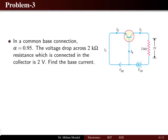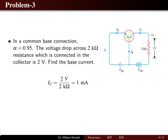In the third problem using a common base amplifier, alpha is 0.95. The voltage drop across a 2 kilohm resistance connected at the collector is 2 volts. We need to obtain the base current. Since the voltage and resistance at the collector are known, we can calculate the collector current using Ohm's law: collector current equals voltage divided by resistance, which is 1 milliamp.